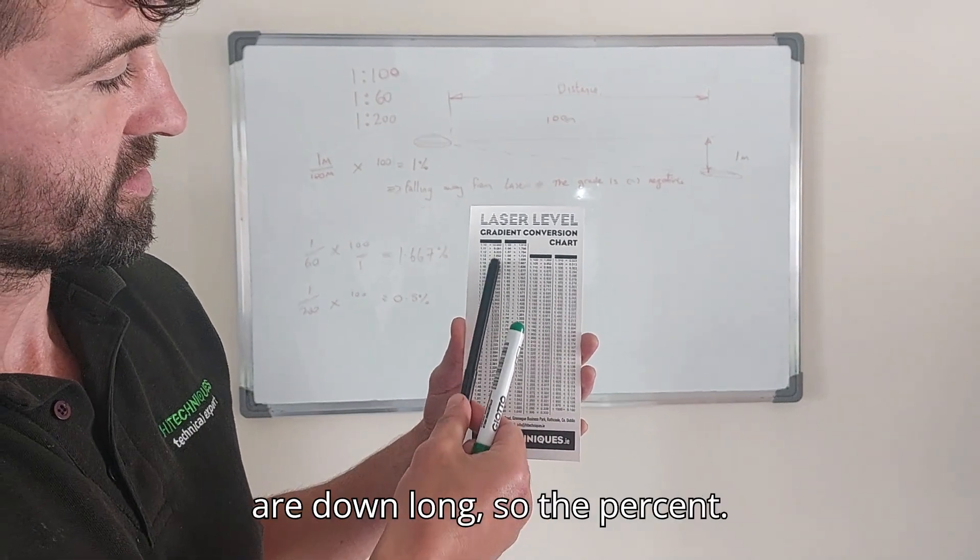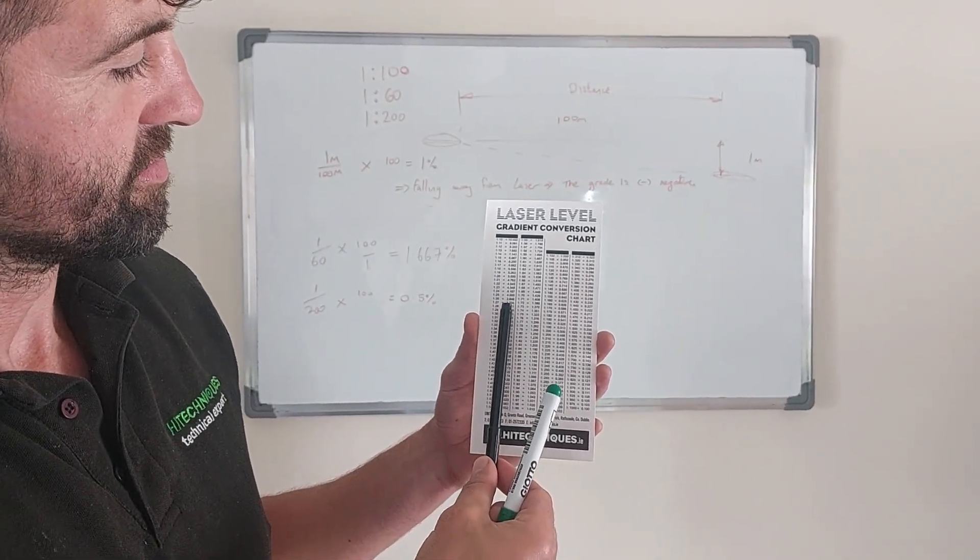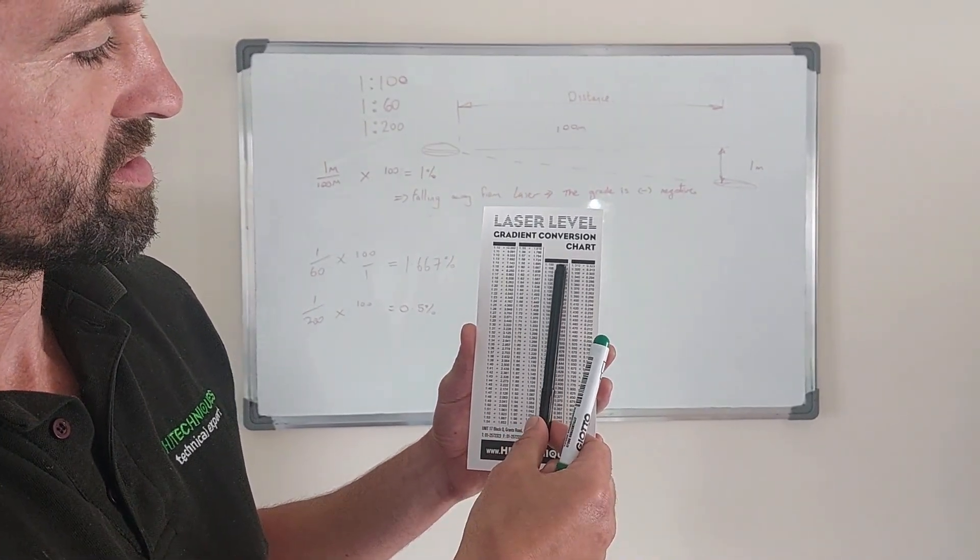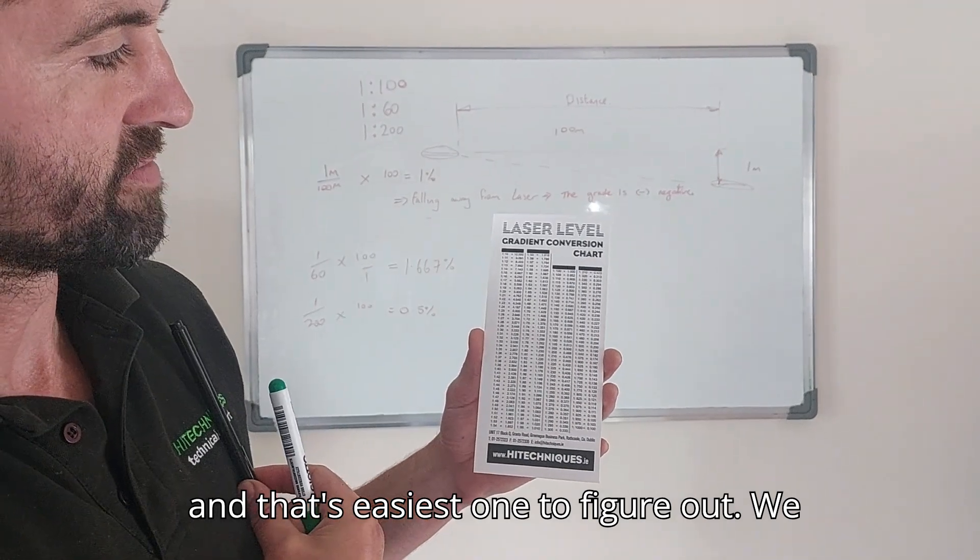And then the percentages are down along, so the percentage fall or percentage grade for 1 is to 100 will always be 1%. That's the easiest one to figure out.